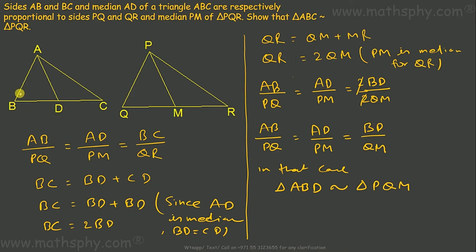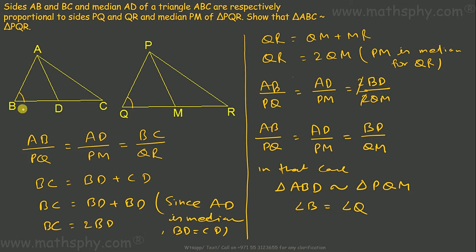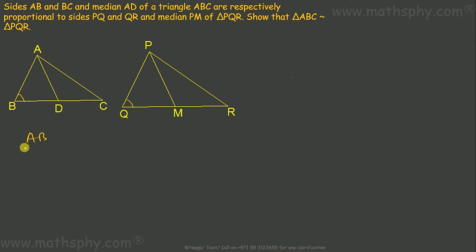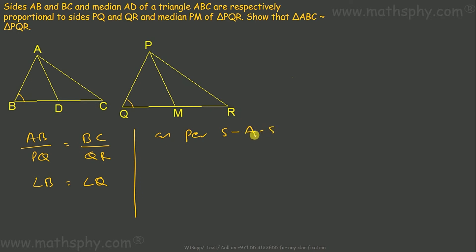Since triangles ABD and PQM are similar, angle B is equal to angle Q. We already have AB over PQ equals BC over QR, and now angle B equals angle Q. In the two triangles, the sides including that angle — AB and BC for angle B, and PQ and QR for angle Q — are proportional. So by the Side-Angle-Side similarity criteria, triangle ABC is similar to triangle PQR.